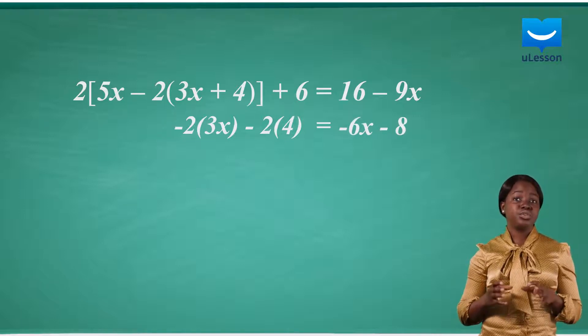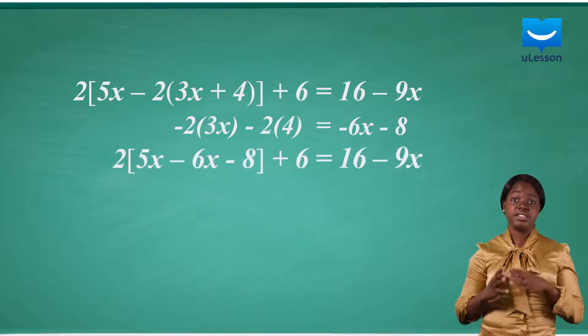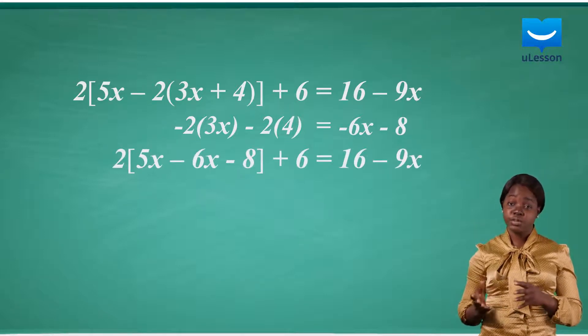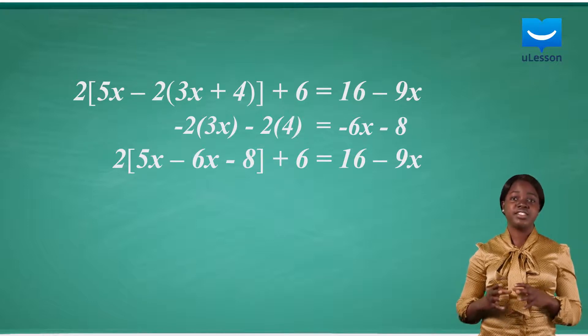The equation becomes 2 bracket open 5x minus 6x minus 8 bracket closed plus 6 equals 16 minus 9x.